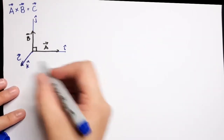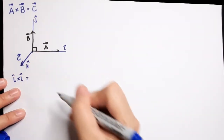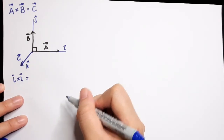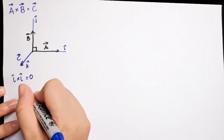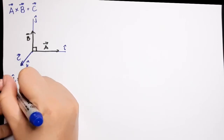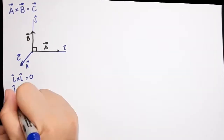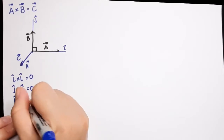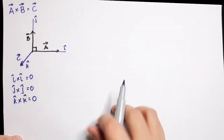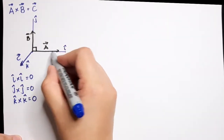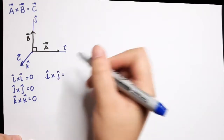We have to note that if two vectors are cross-multiplied in the same direction, the answer is zero. So i cross i is equal to zero, j cross j is also equal to zero, and k cross k is also equal to zero.